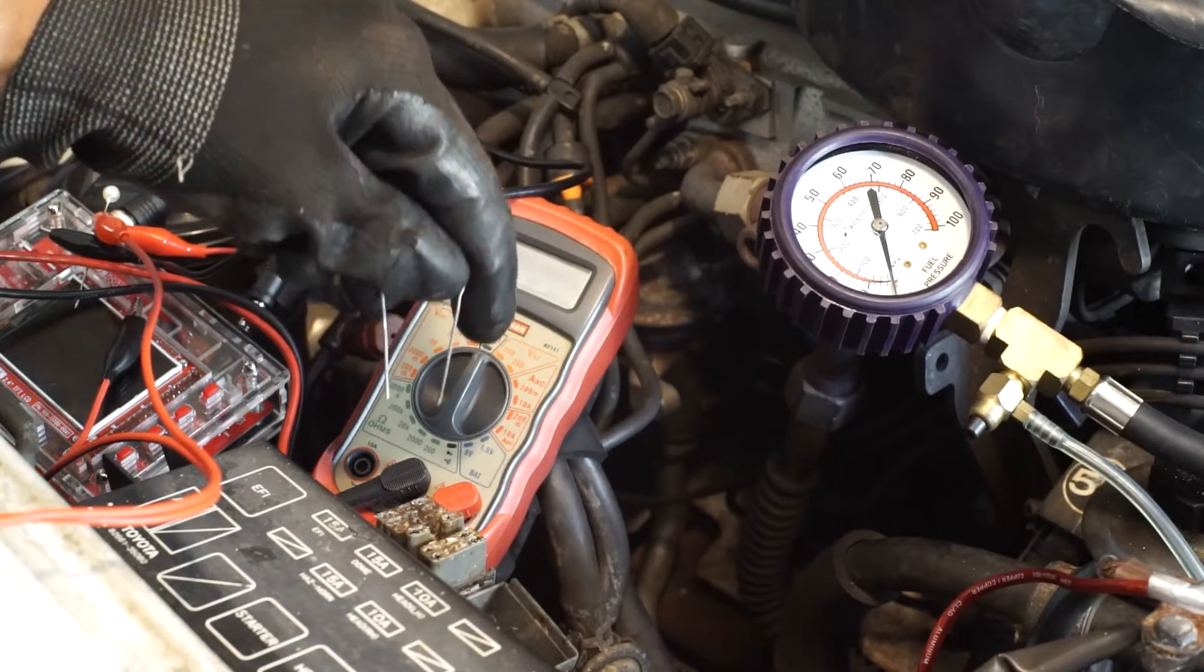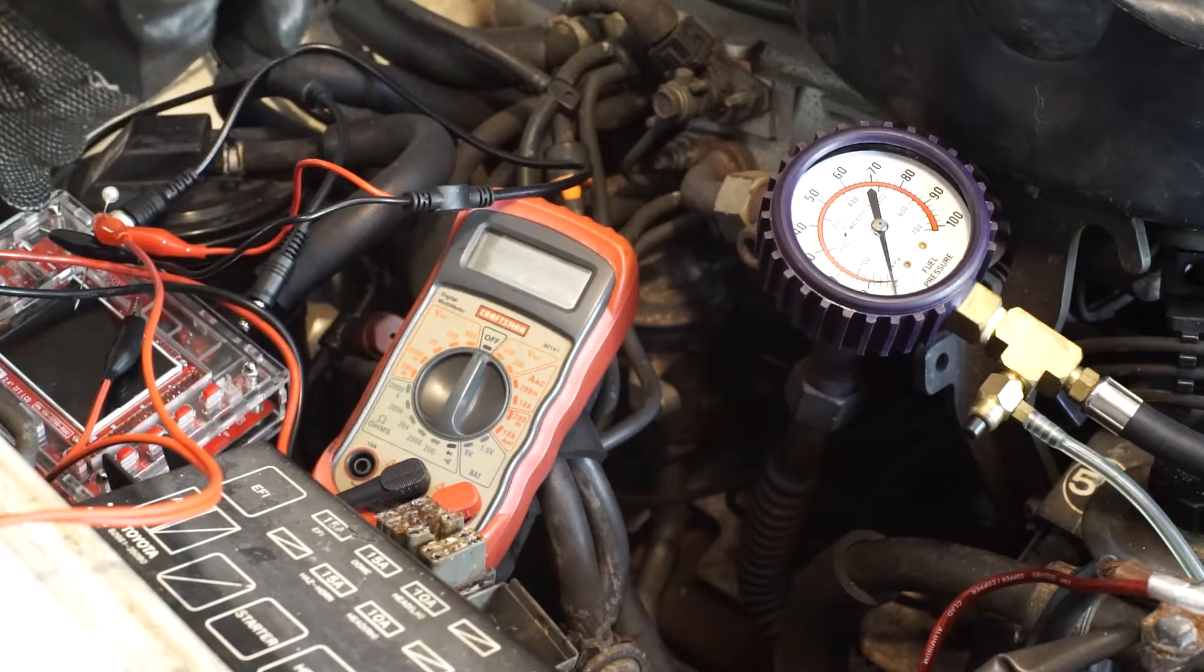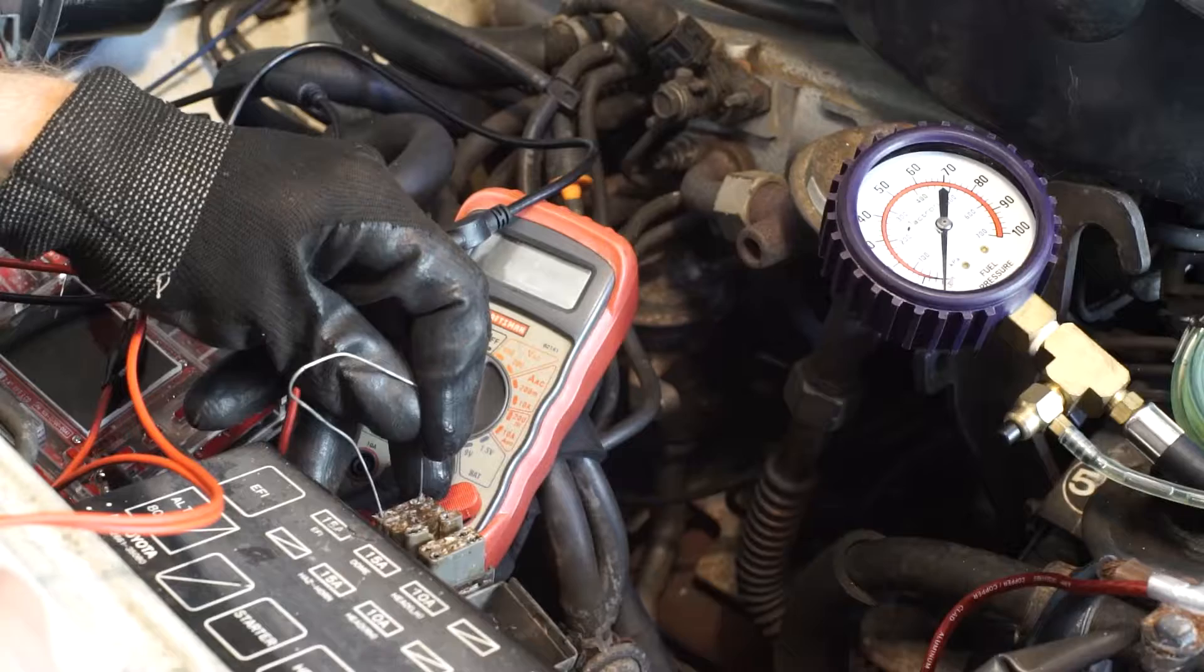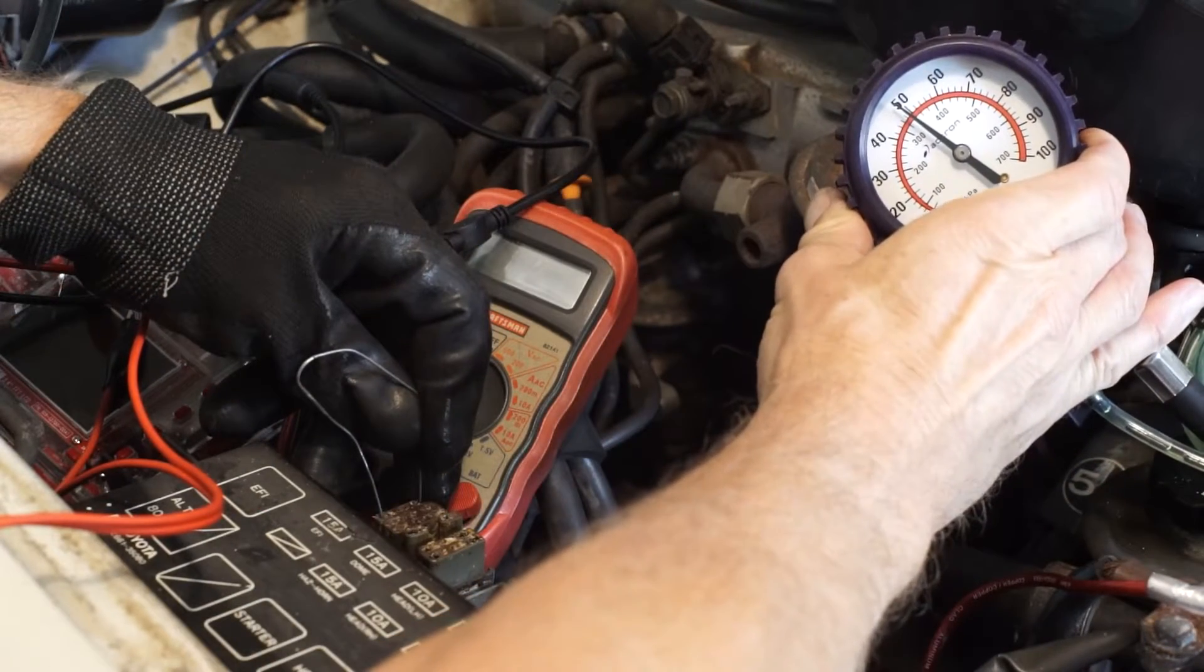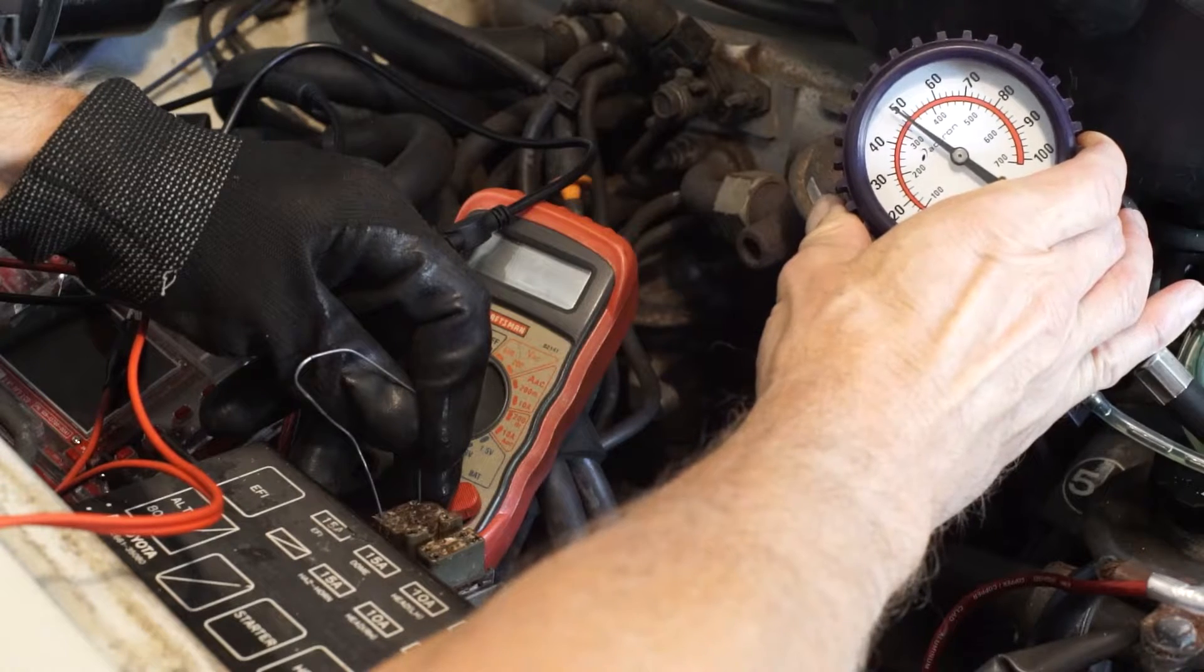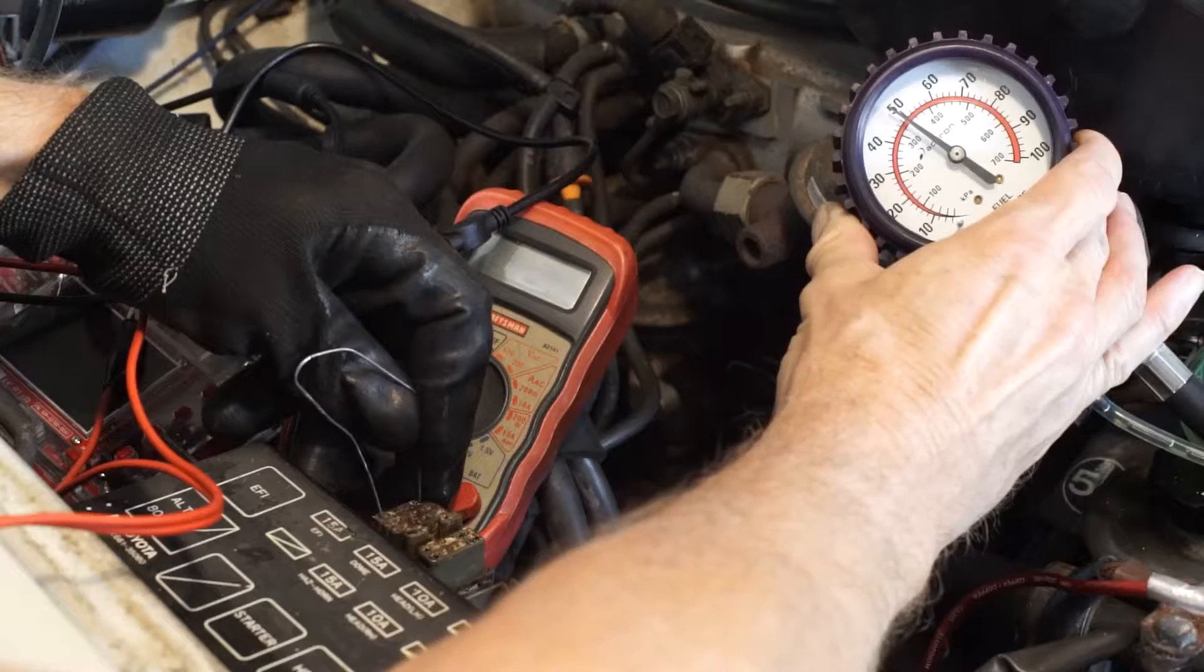This is the fuel pressure regulator right on the edge here on the fuel rail. All we have to do is connect plus B and FP, and we should get a fuel pressure reading right here. 48, 49. Supposed to be 38 to 44 is correct. So we've got possibly the problem right here.